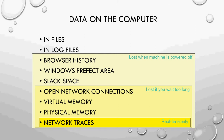Data that can be found on a computer includes files, log files, browser history, the Windows prefetch area, and slack space — these three would be lost if the machine is powered off, so we need to collect them first. Open network connections, virtual memory, and physical memory would be lost if we wait too long. Network traces are real-time only — they exist only while the system is on.